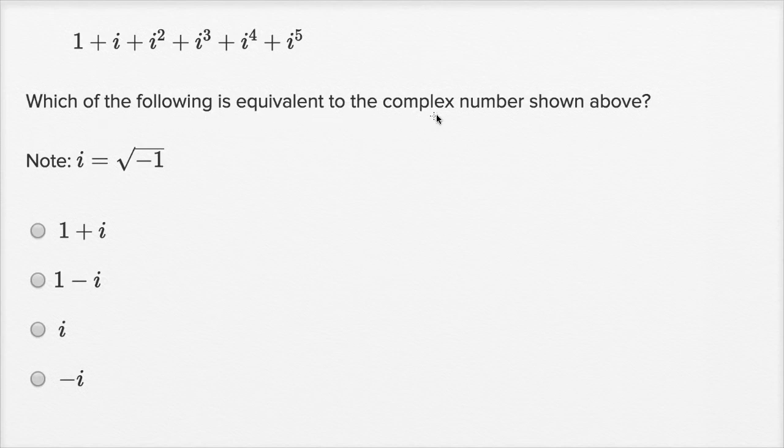Which of the following is equivalent to the complex number shown above? We have one plus i plus i squared plus i to the third plus i to the fourth plus i to the fifth. And they remind us, note, i is equal to the square root of negative one. And if i is equal to the square root of negative one, that of course means that i squared is equal to negative one.